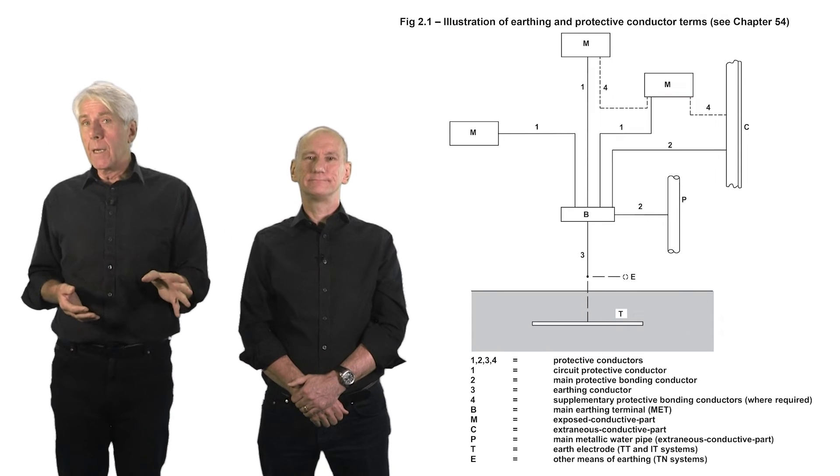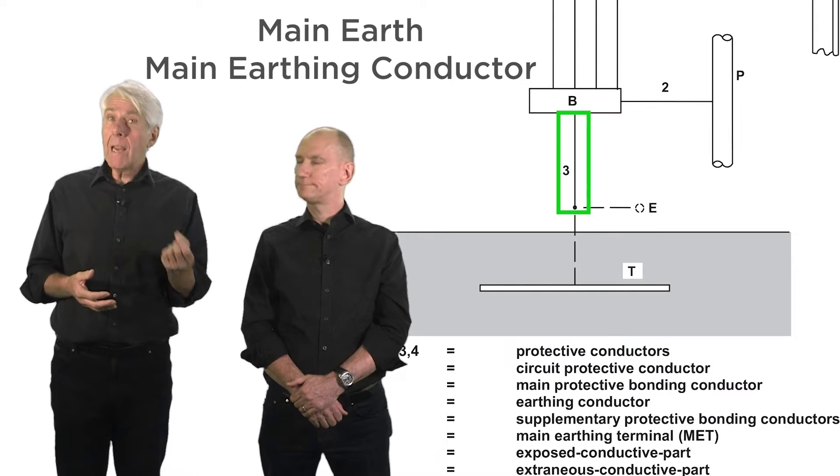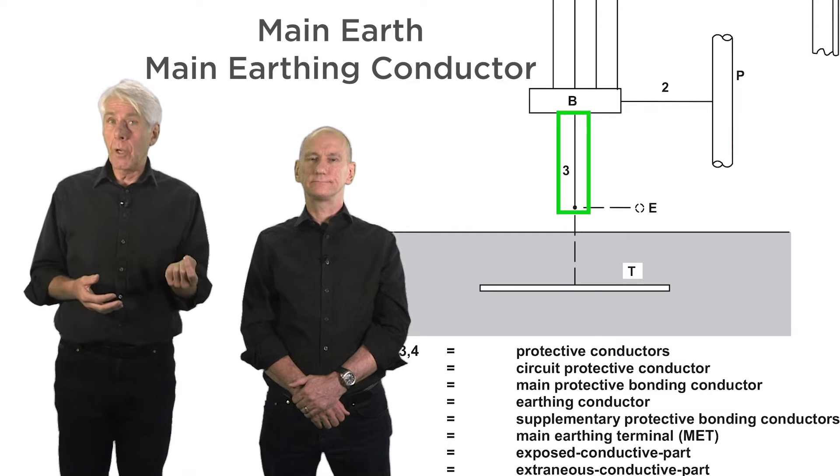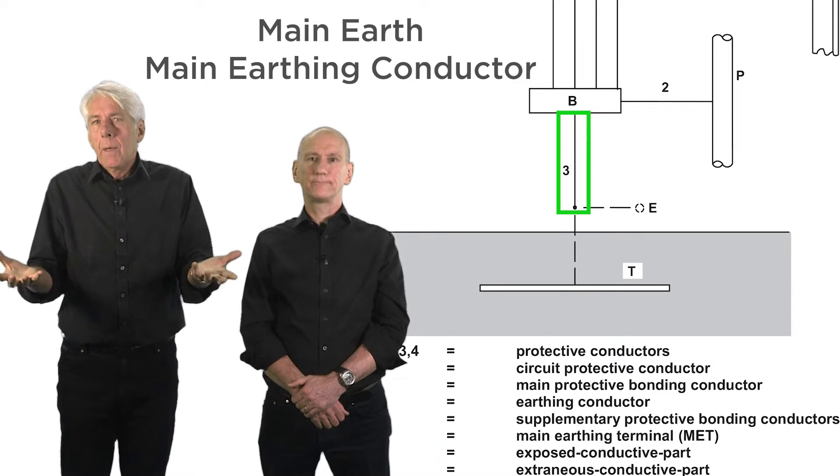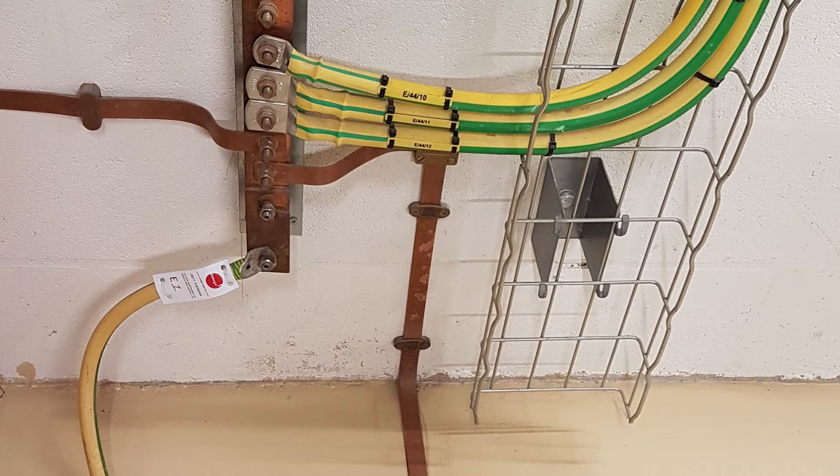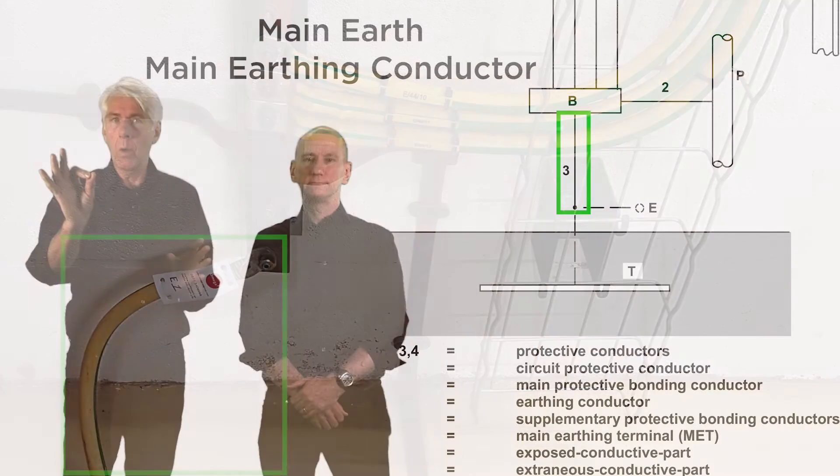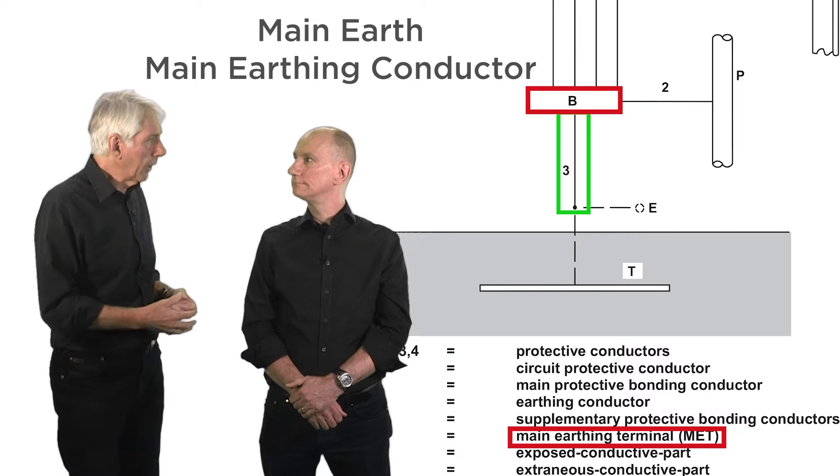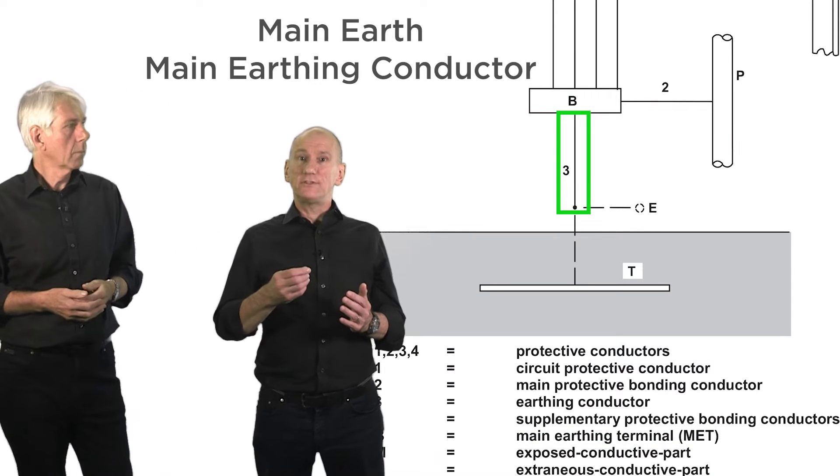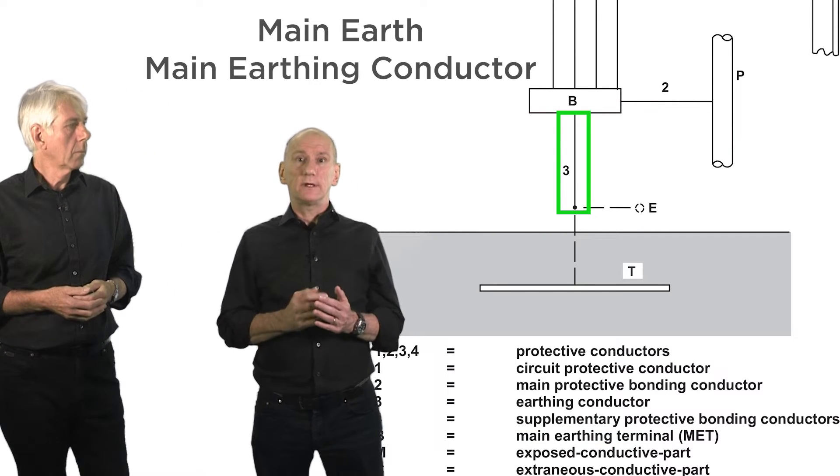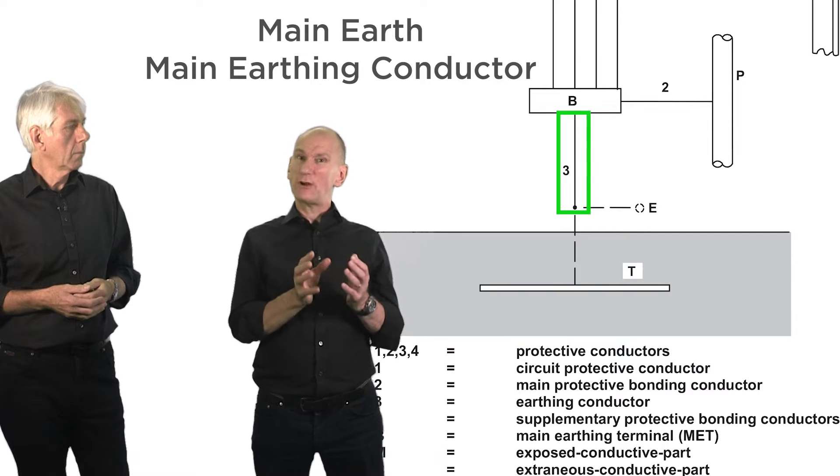Okay, sticking with the word main, many use this word inadvertently to refer to the conductor that connects the main earthing terminal to the means of earthing, calling it the main earth or main earthing conductor. Now you can see why that happens, as there's lots of green and yellow conductors so many will see that conductor as the main one, and of course it is connected to the main earthing terminal.